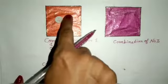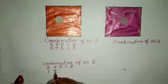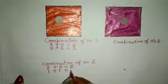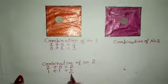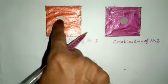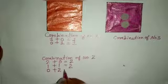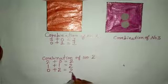Now I am shifting one button into the second box. First box one button and second box one button. One plus one equal to two. Now I shift one more button into the second box — first box me kuch bhi nahi hai, zero. Zero plus two equal to two. This is combination of number two.